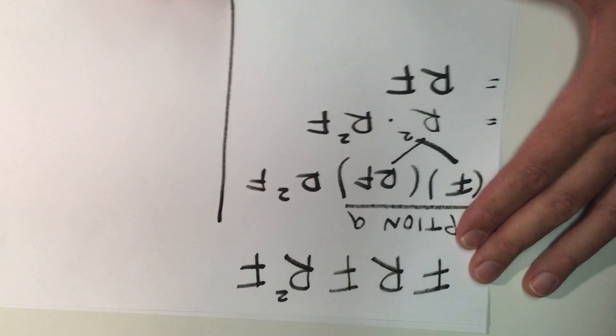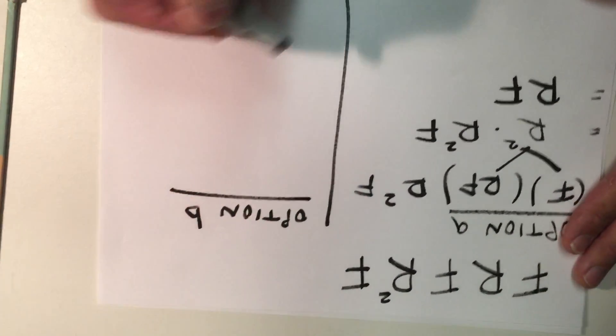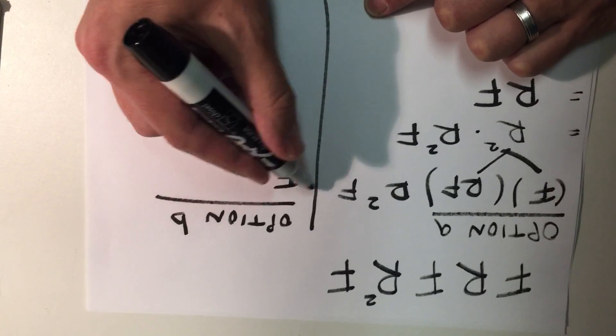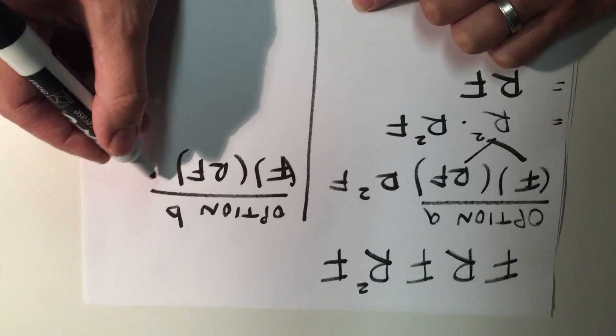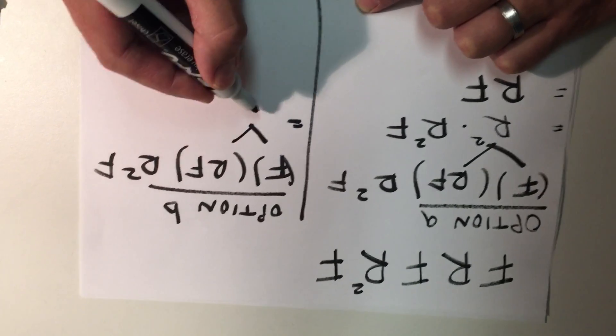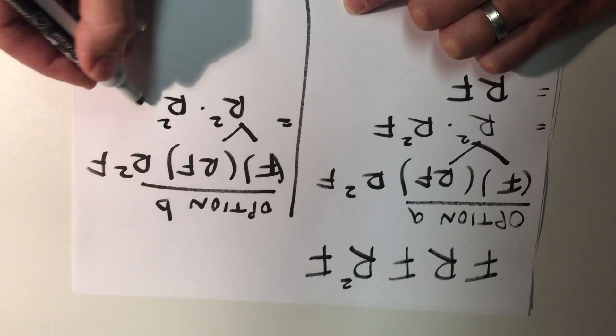Now let me do option B, which is quite similar. So it really starts the same way. I'm going to combine F and RF. And what we got out of that was R squared, and then I have R squared and F.